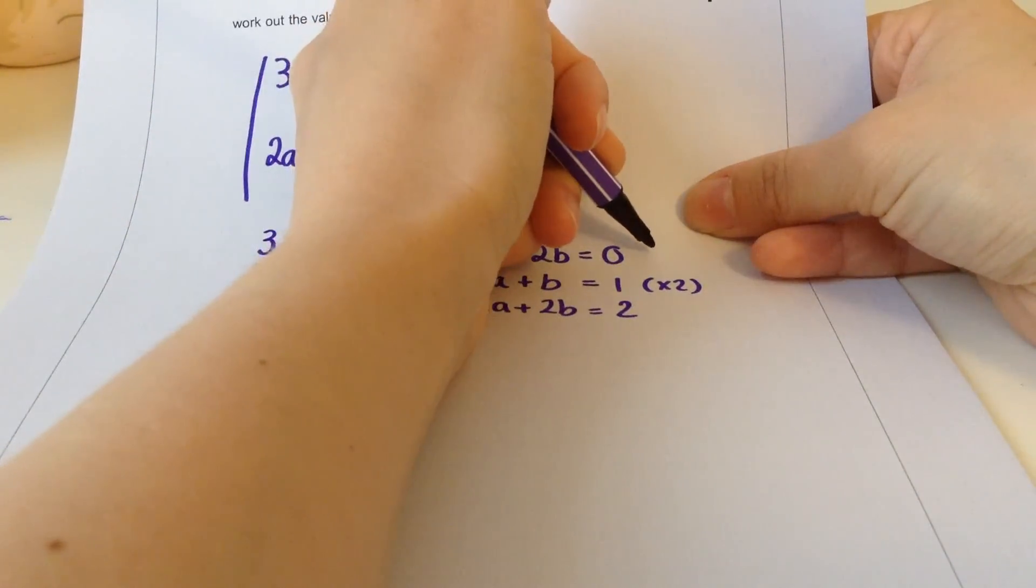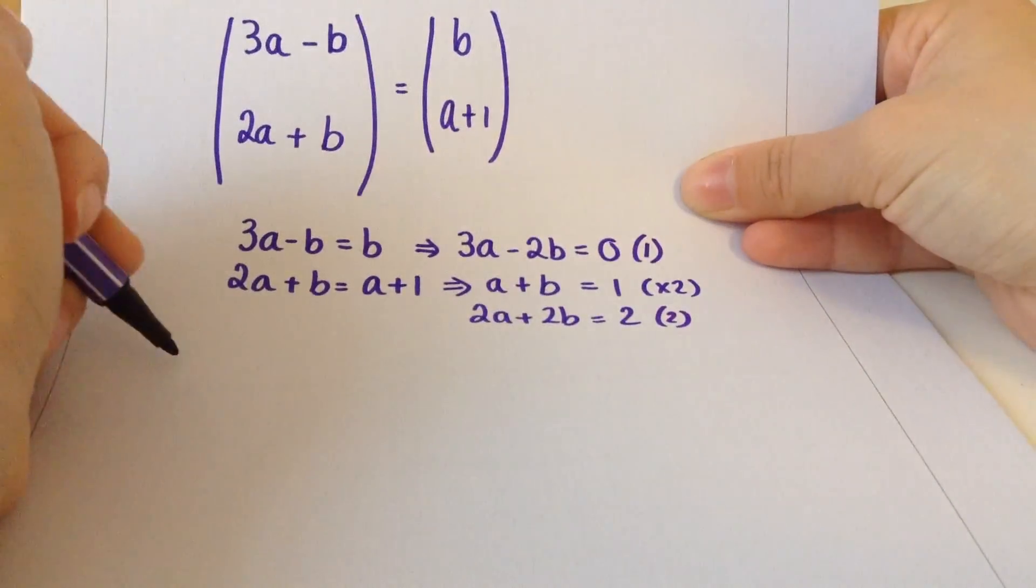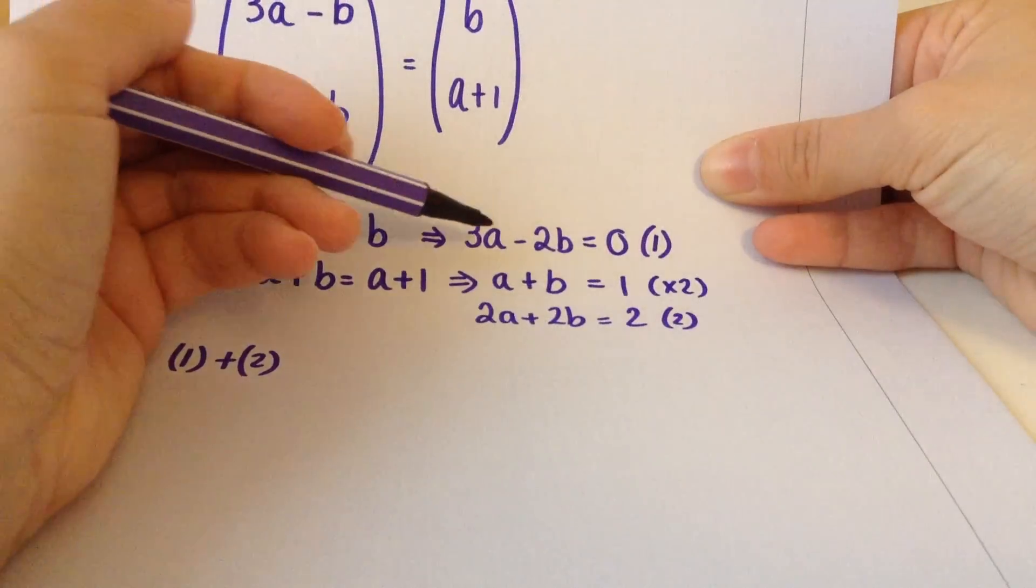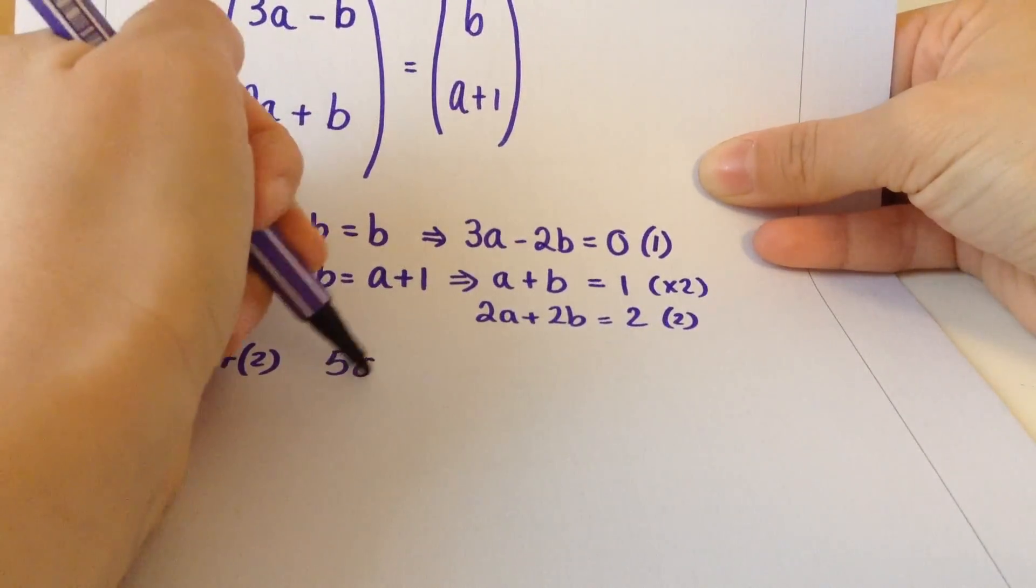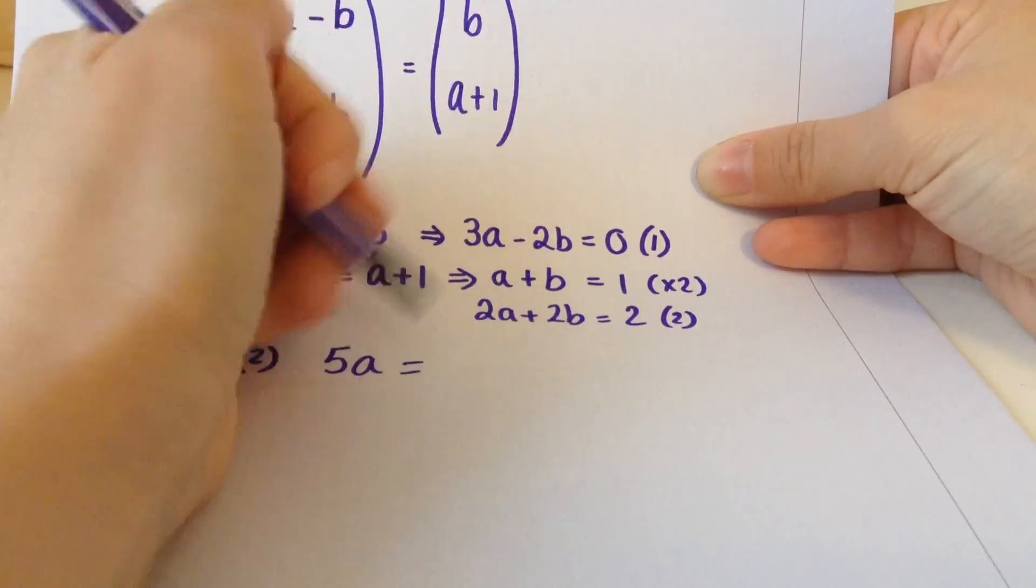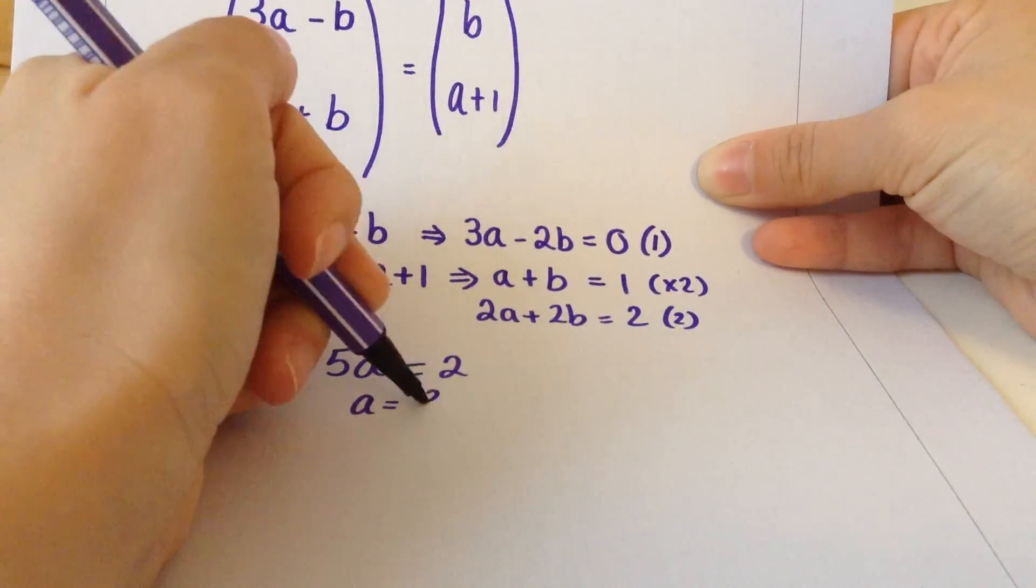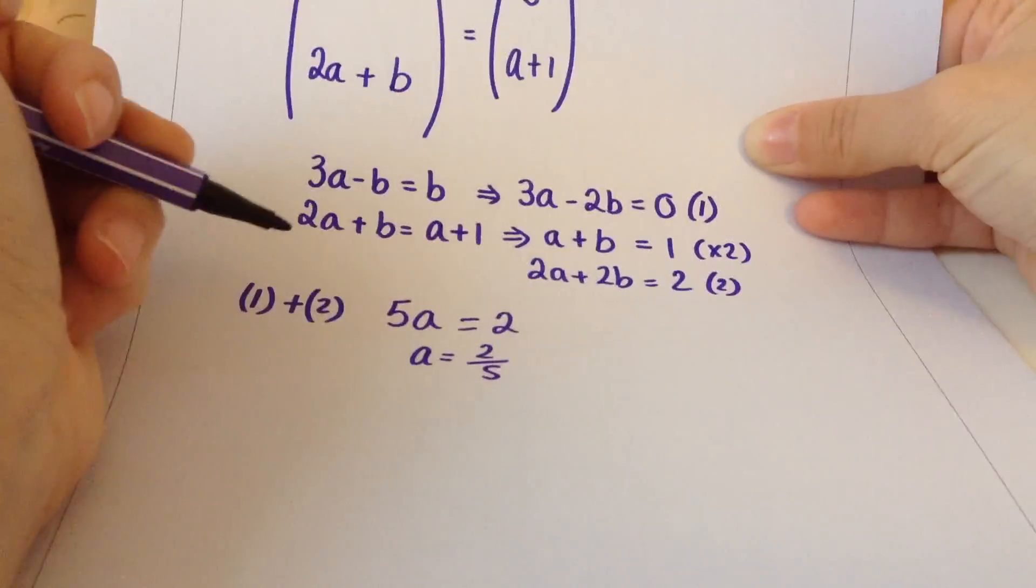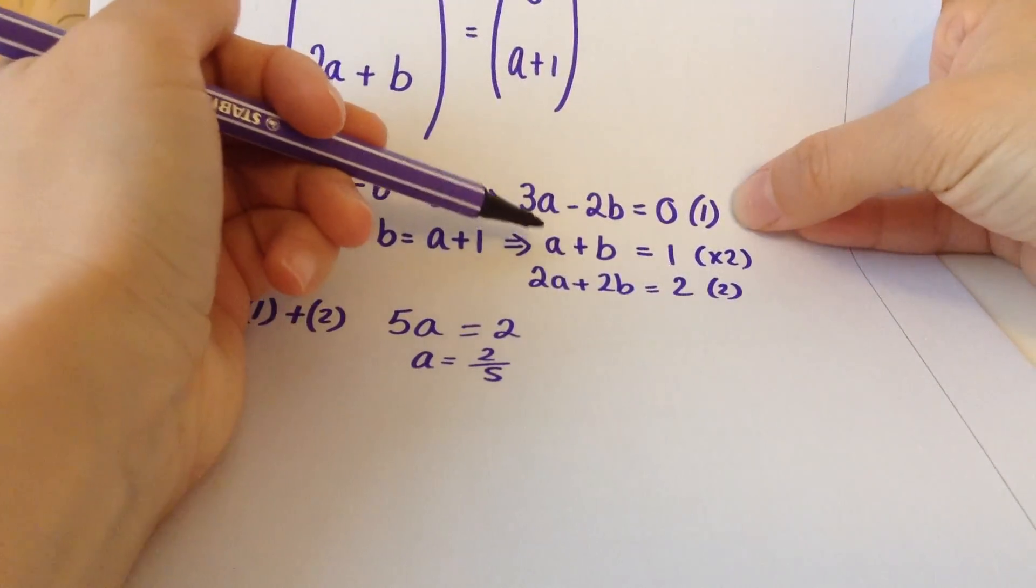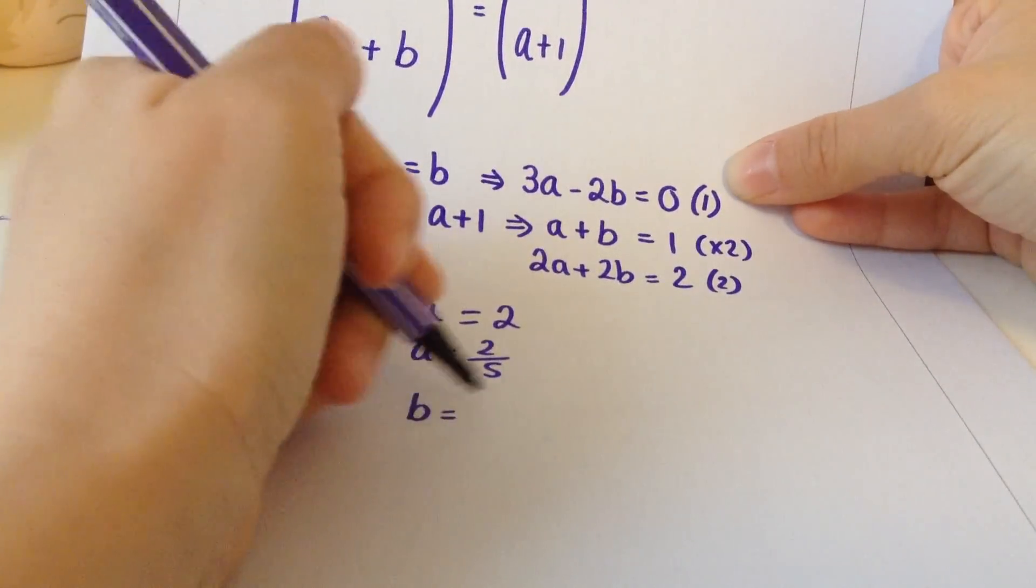I'm going to add these two equations together. That's 1 and that's 2. Equation 1 plus equation 2: 3a plus 2a is 5a, minus 2b plus 2b is nothing, 0 plus 2 is 2. So a is 2 fifths. Going back to this equation, a plus b equals 1, and a is 2 fifths, so b has to be 3 fifths.